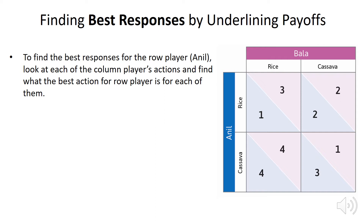First, we'll think about Anil, who's the row player, and try to figure out what is his preferred action when Bala, the column player, plays either rice or cassava. Remember, this example is about what crops they each choose to plant. If Bala plays rice, Anil will see that if he also plays rice he'll get 1, whereas if he plays cassava he'll get 4. So he'll prefer to play cassava if Bala plays rice.